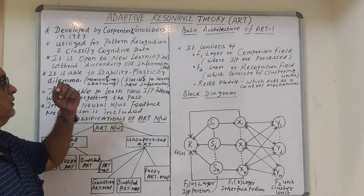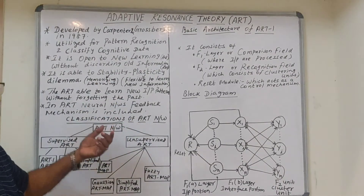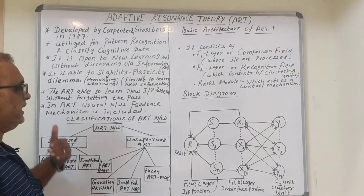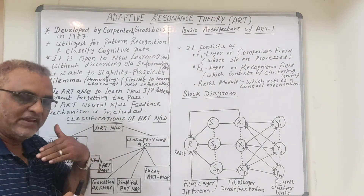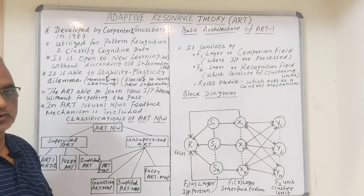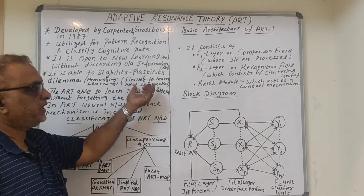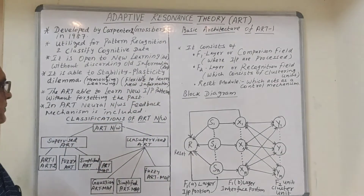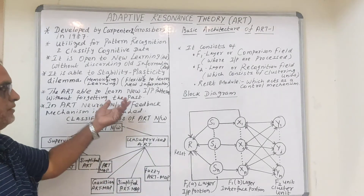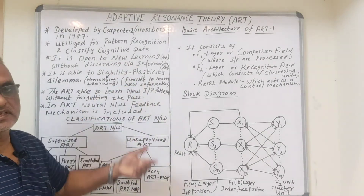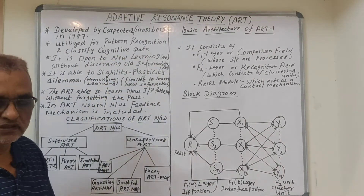ART is able to address the stability-plasticity dilemma. Stability refers to memorizing the learning — whatever is learned, it is able to remember. Plasticity is the flexibility to learn new information. ART is highly helpful for pattern recognition and for processing cognitive data because of this particular aspect.